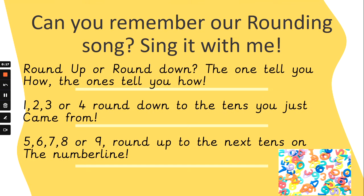Can you remember our rounding song? Sing it with me. Round up or round down, the ones tell you how, the ones tell you how. One, two, three or four, round down to the tens you just came from. Five, six, seven, eight or nine, round up to the next tens on the number line. Round up or round down, the ones tell you how, the ones tell you how.